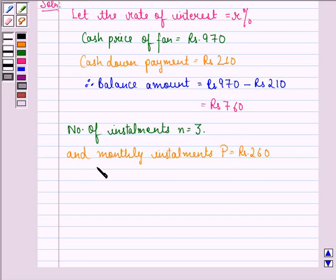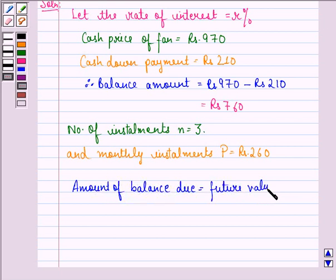Under the installment plan, at the end of the scheme, the amount of balance due is equal to the future value of installments.